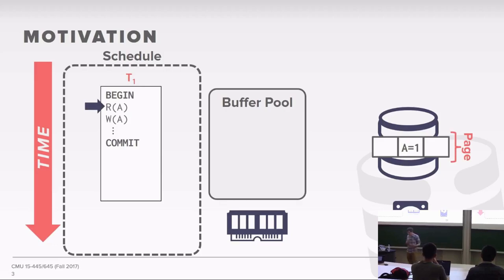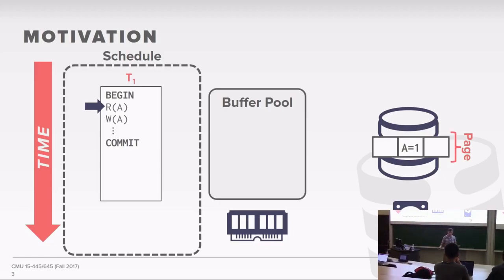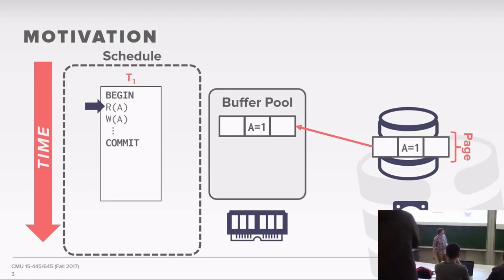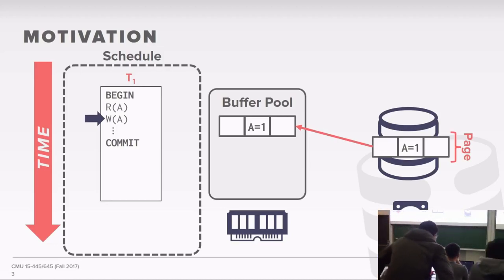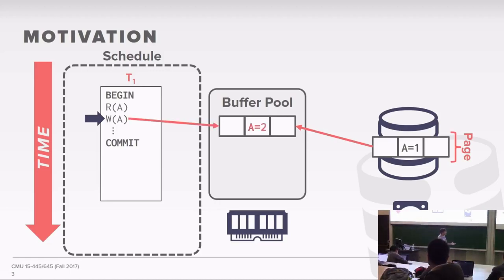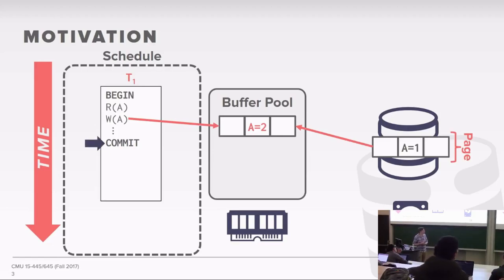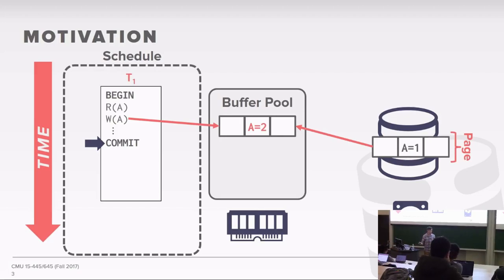When the transaction starts, it does a read on A. You look in your buffer pool manager to see whether the page you're trying to read is there. In this case it's not, so we go out to disk and make a copy of that page into memory, and then we can read the value. The next step, we do a write on A. The update first lands in the buffer pool because all changes always have to go to memory first. But now the transaction wants to commit, and we want to tell the outside world that yes, we got all your changes. But at this point, is our change durable?